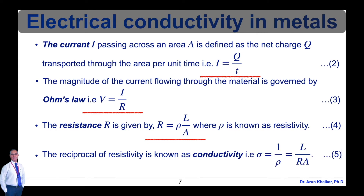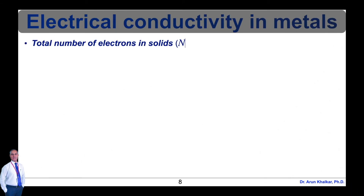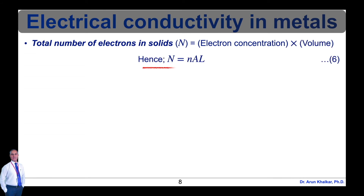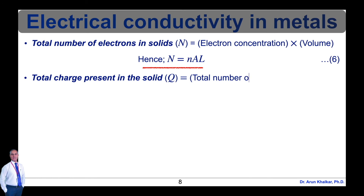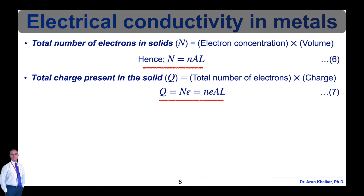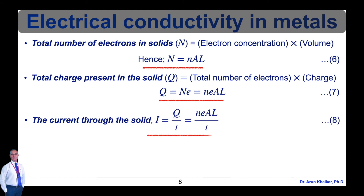The reciprocal of resistivity is conductivity: σ = 1/ρ = L / (R × A) — equation 5. The total number of electrons in the solid N = n × A × L — equation 6. The total charge in the solid Q = N × e = n × e × A × L — equation 7. The current through the solid can be written as I = Q / t = N × e × A × L / t — equation 8.